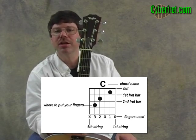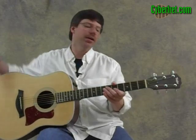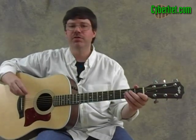A zero means an open string — an open string is where you're not touching anything with your left hand. And if you see a one, that means your first finger.